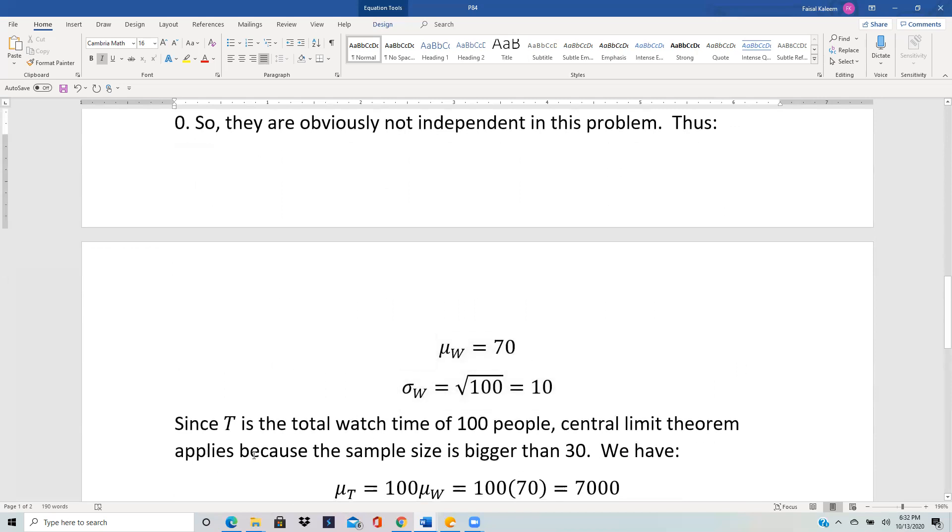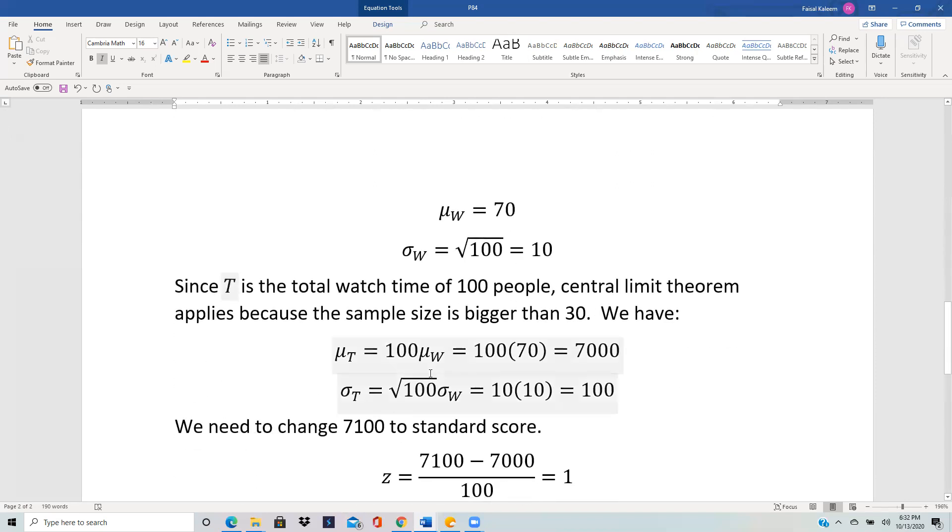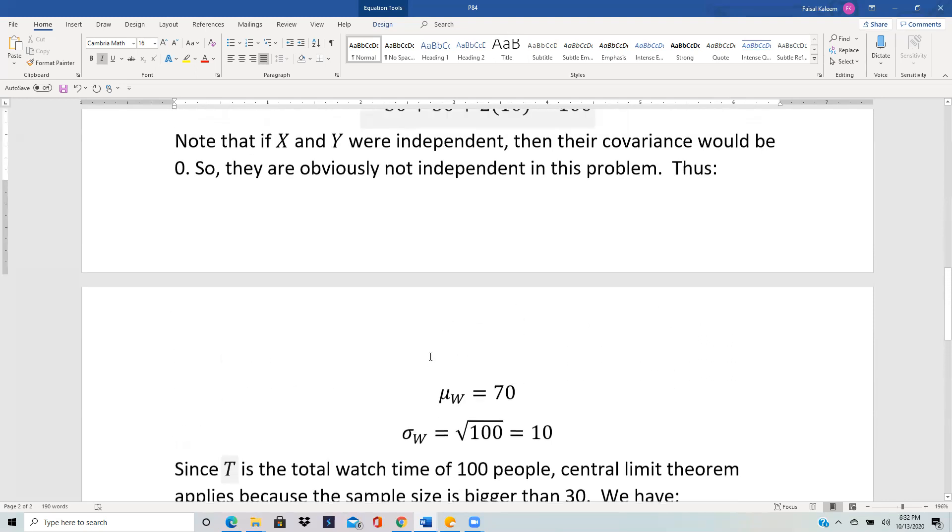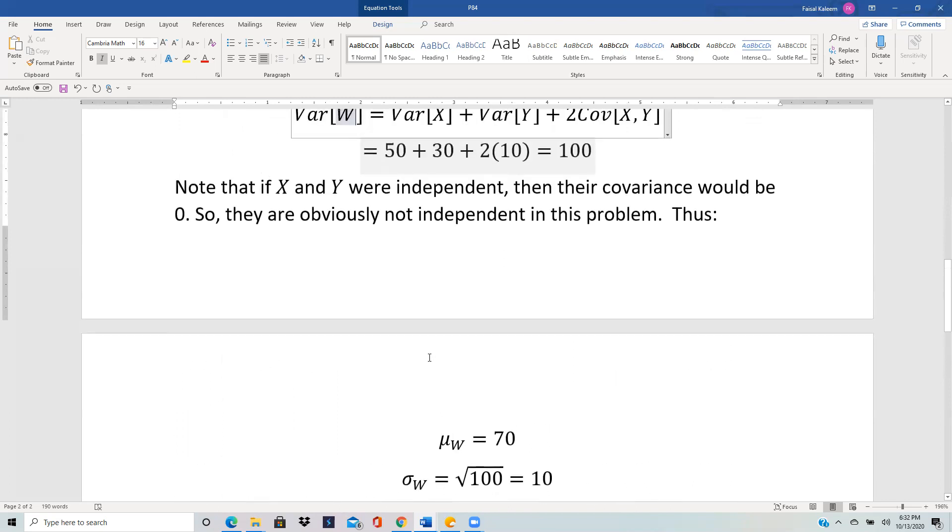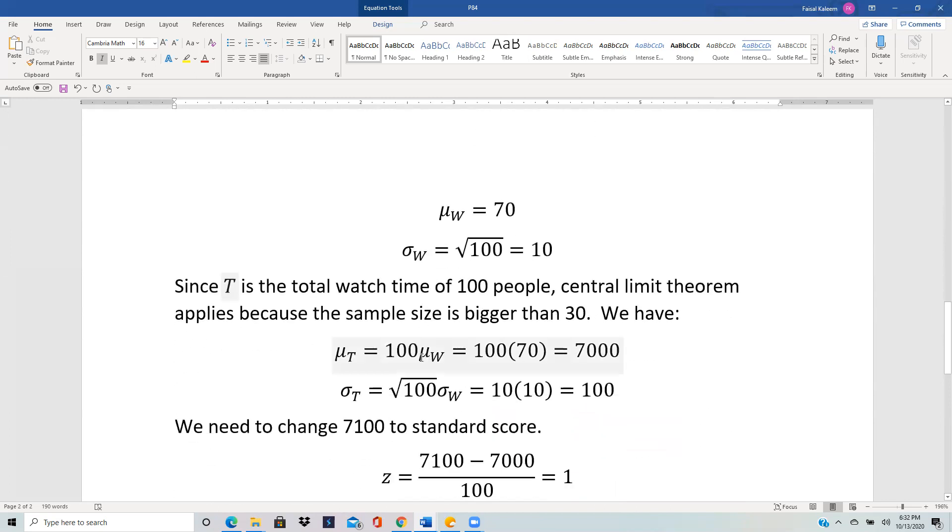T is the total watch time of 100 people. Since 100 is bigger than 30, central limit theorem applies, and T can be treated as a normal variable whose mean would be the sample size times the mean of each person's watch time, so 100 times 70.